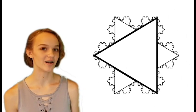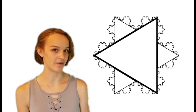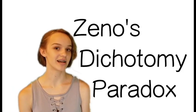The Koch snowflake can also be proved to have an infinite perimeter, but a finite area, using Zeno's dichotomy paradox.